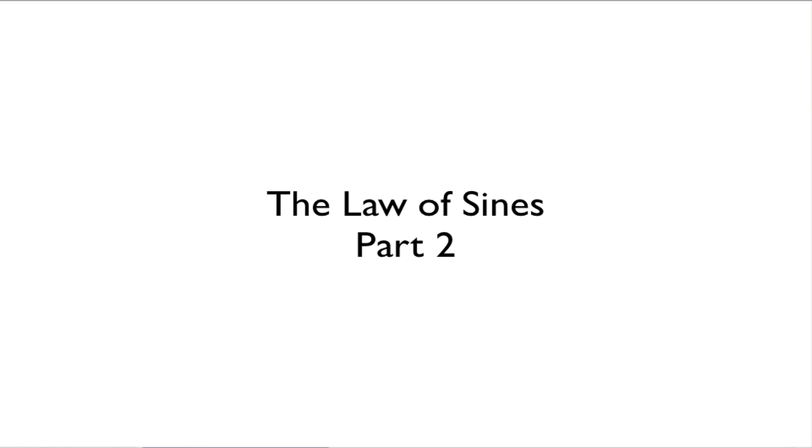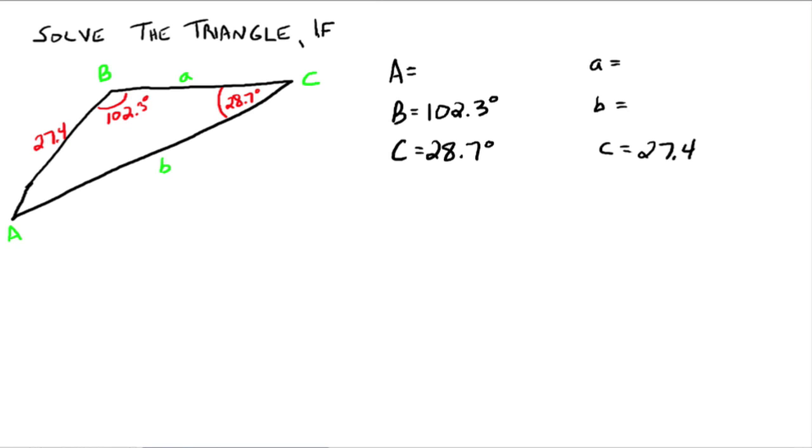All right, this is the second part of the Law of Sines. Let's look at an example of using the Law of Sines. So solve the triangle, which means we're looking for all six pieces of the triangle. Notice that we're given three here. We're given angle C, angle B, and then side C.